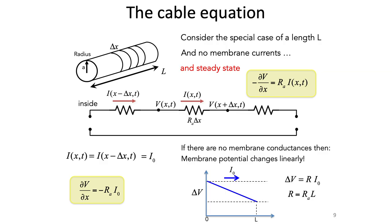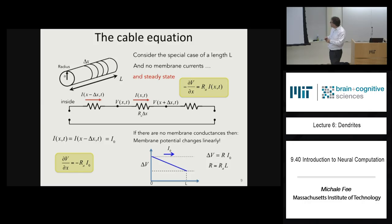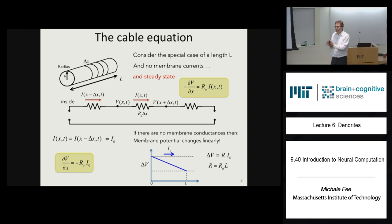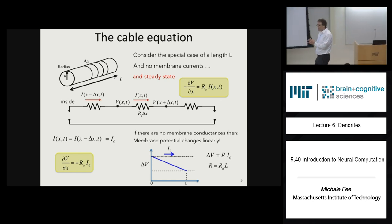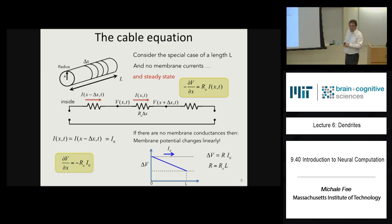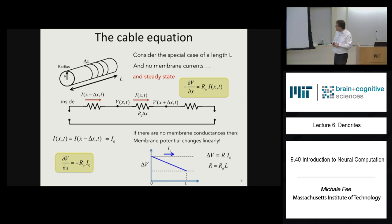The voltage delta V — the voltage difference from the left side to the right side — is just the total resistance times the current, Ohm's law again. The total resistance is the axial resistance per unit length times the length. So: voltage changes linearly if you don't have any membrane conductances, and you can write down the relation between the voltage difference and the current very simply.